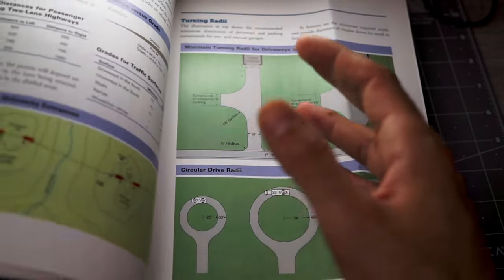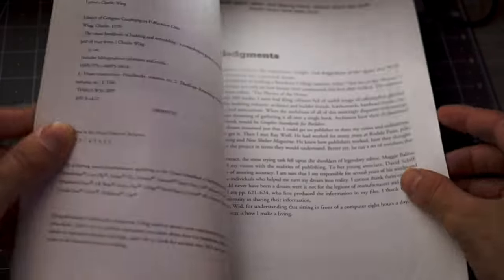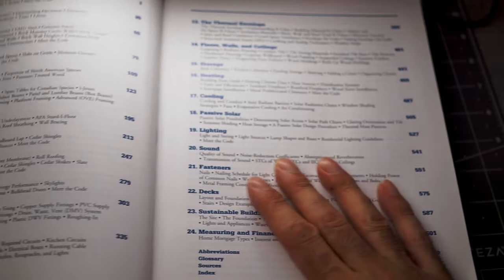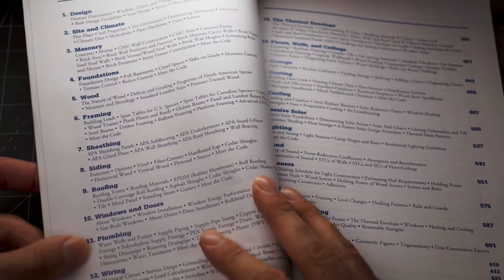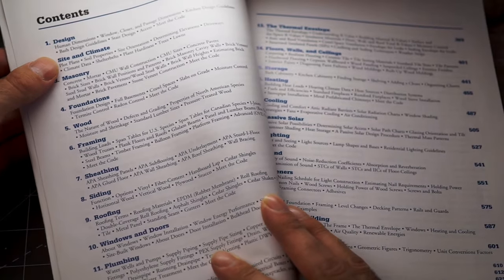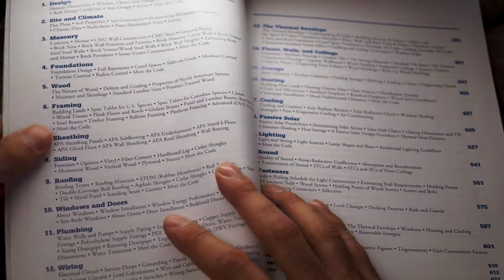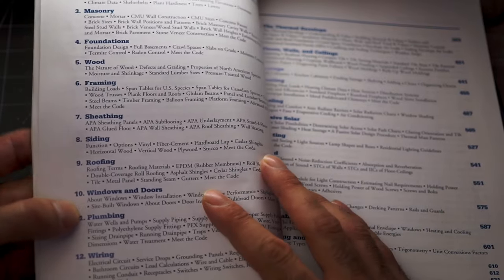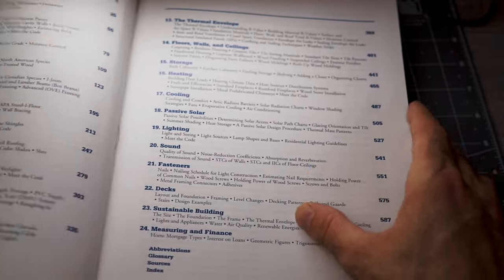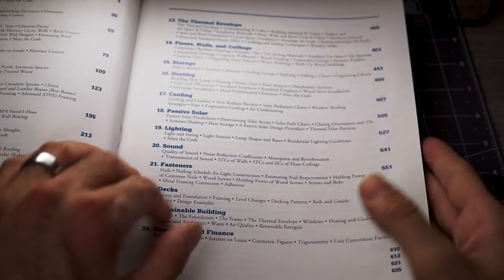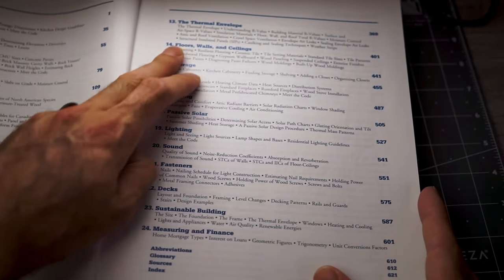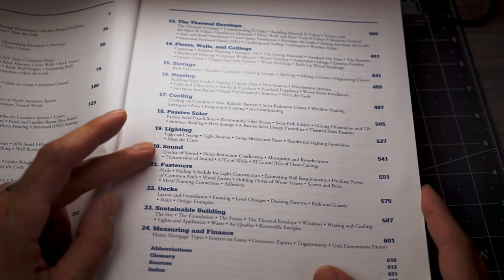This book has so much information on all sorts of aspects of construction: design, site, masonry, foundation, framing, sheathing, windows, plumbing, electrical, and more. Thermal envelope is another important one, along with heating, cooling, and solar. There's just so much information in here.